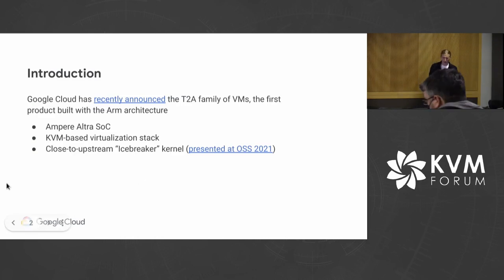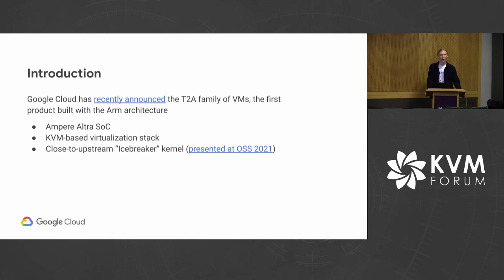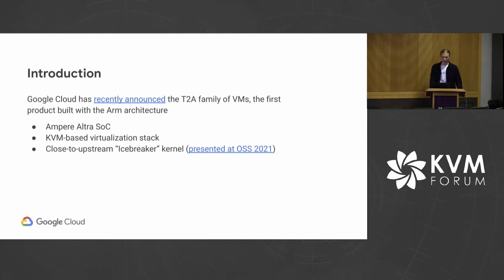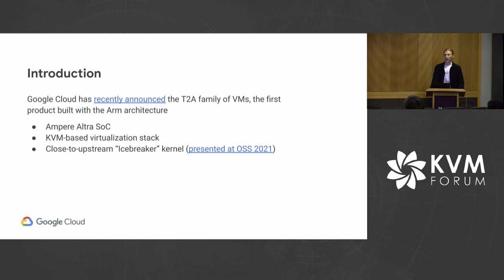A quick introduction. Google Cloud recently announced the T2A family of virtual machines, which is its first offering built on the ARM architecture. The product is currently in public preview, and it's built using the Ampere Ultra SoC. Similar to our x86-based offerings, we're using a KVM-based virtualization stack. One decision we made is using a new kernel, the so-called Icebreaker kernel, presented last year by colleagues at Google. It is intended to be a close-to-upstream kernel for Google production workloads, and we chose it for T2A to stay as close as possible with upstream.